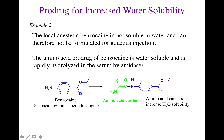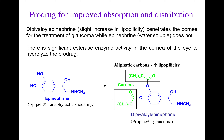The local anesthetic benzocaine is not soluble in water and therefore cannot be formulated for aqueous injection. The amino acid prodrug of benzocaine is water soluble and is rapidly hydrolyzed in the serum by amidase enzymes. To make an aqueous injection of benzocaine, researchers use this amino acid carrier — amino acids increase water solubility because they are protonated at physiological pH. In this case, it is not an ester prodrug but an amide prodrug, and amidase enzymes can rapidly hydrolyze this carrier to release active benzocaine in the serum.